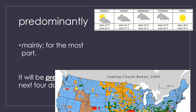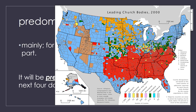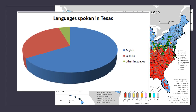It's predominantly cloudy through the next four days. Here you can see a map about churches in each county in our country. In the south there are lots of red churches, showing that the churches in those counties are predominantly Baptist. The churches in the counties shown in light blue are predominantly Catholic, so most of the churches in those counties are mostly Catholic. The predominant language in Texas is English — it is the biggest chunk of that pie chart.